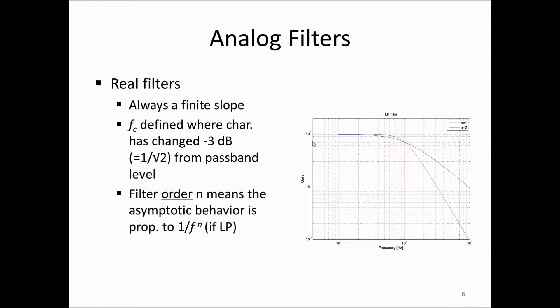Next the filter order n means the asymptotic behavior is proportional to one over f to the nth power. That is if it's a low pass filter, but similarly if it's a high pass or band pass filter.